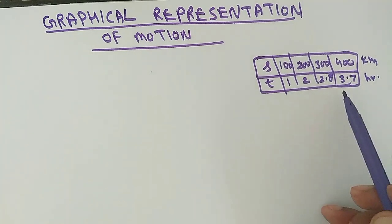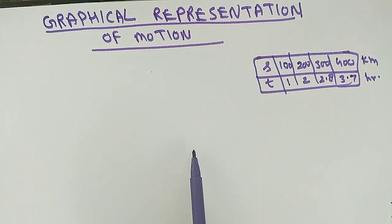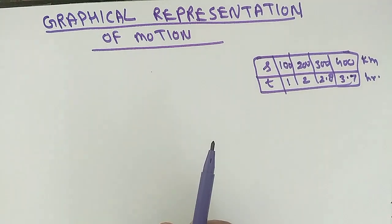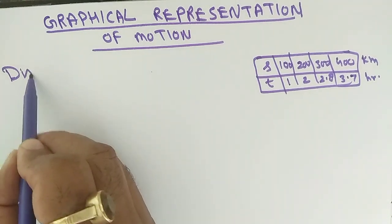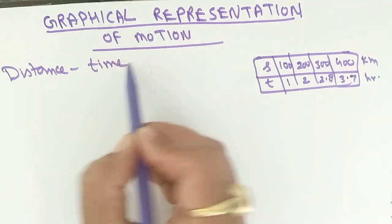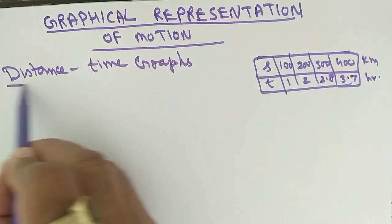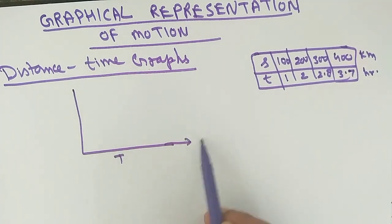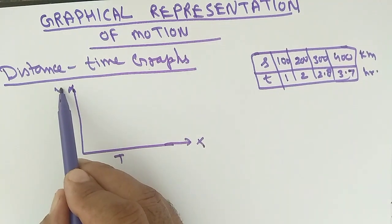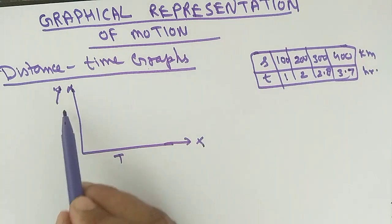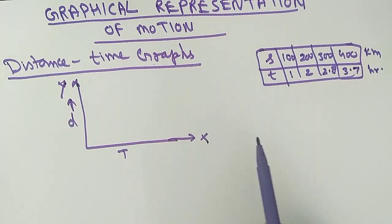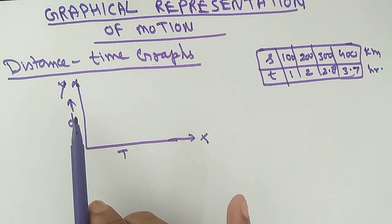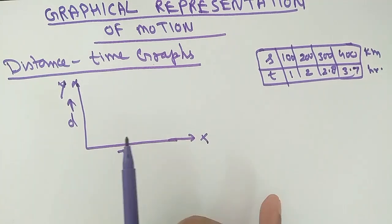In this video we'll discuss graphical representation of motion. In your syllabus we have two types of graphs: first is the distance-time graph, and second is the velocity-time graph. The distance-time graph is defined as: if time is taken on the x-axis and distance is taken on the y-axis, then the graph so obtained is called the distance-time graph.